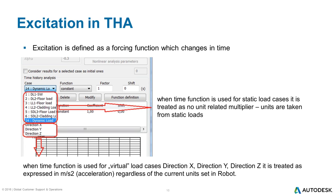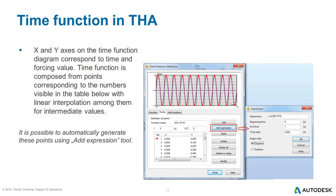For earthquake direction cases, the forcing function is defined in SI units — for acceleration that is meters per second squared — regardless of the units set in Robot job preferences. This is especially important for those using American units or for accelerograms defined relative to the gravity value. The time function diagram shows time on the horizontal axis and forcing value on the vertical axis. As the diagram is built from values given for indicated time points with linear interpolation for intermediate values, it is recommended to provide a sufficient number of points to obtain the exact shape of the function.